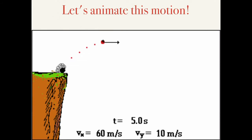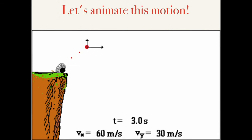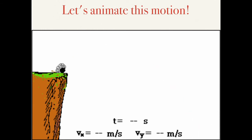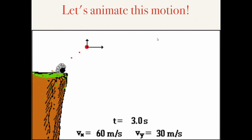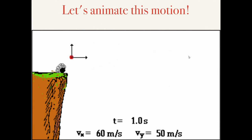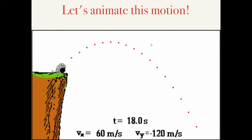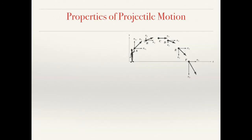I'll animate this motion as well. You can see the vertical velocity vector decreasing going upward, reaching zero at the very top, and then growing downward. The horizontal velocity component is constant — 60 meters per second in this case. The vy starts at 60, becomes zero at the peak, then grows negative at about 10 meters per second per second, which is approximately g. This is what occurs in projectile motion — vx does not change, vy undergoes a constant downward acceleration.